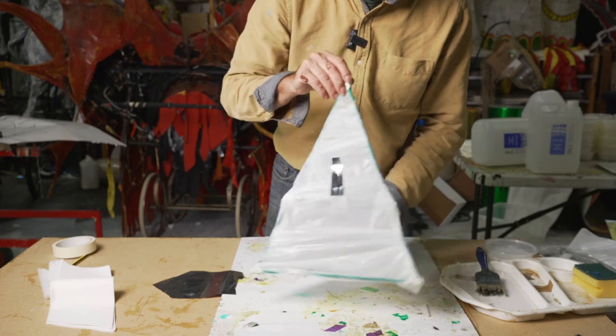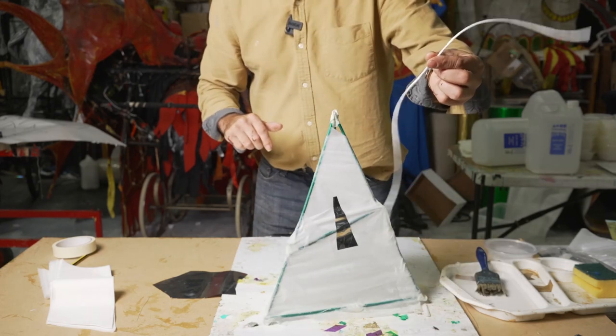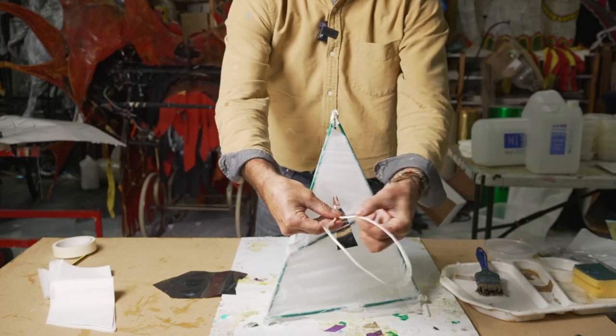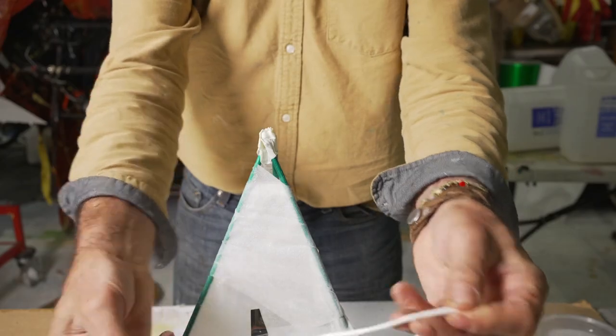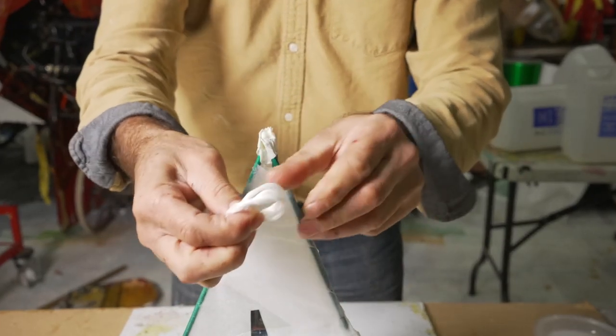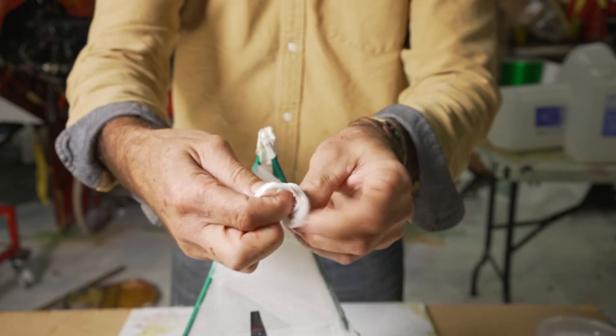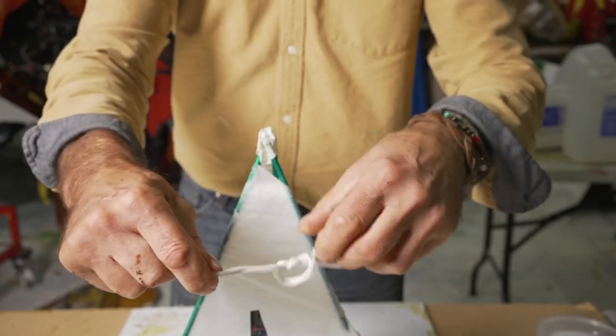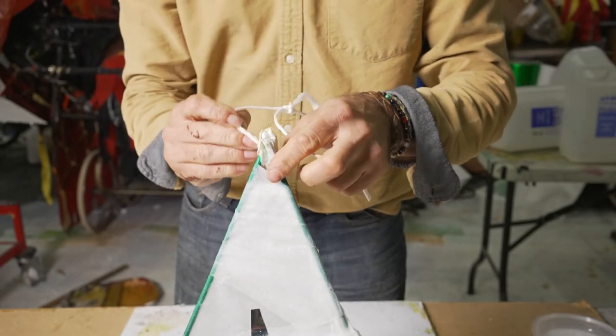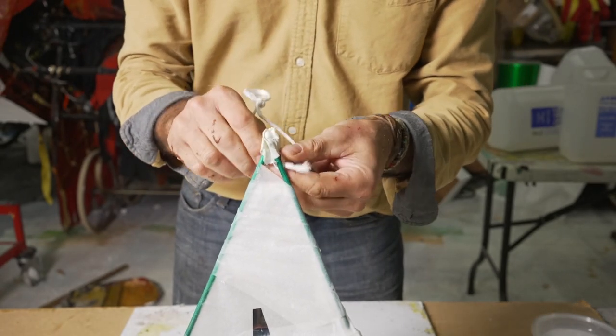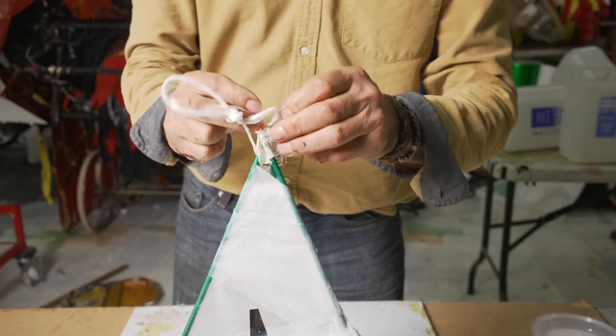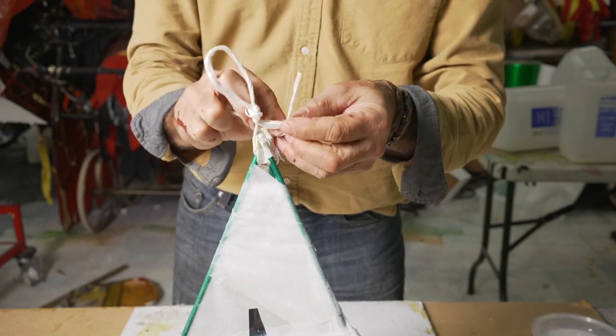You'll need a bit of string—a shoelace is an ideal kind of length. Fold it in half and I'm going to tie a knot in here to form a loop at one end. And then just thread it through the top of your lantern. I'm going to tie that nice and tightly, and this is just to hang your lantern up.